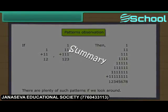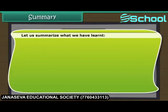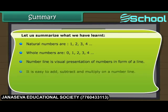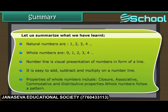Summary: Natural numbers are 1, 2, 3, 4. Whole numbers are 0, 1, 2, 3, 4. A number line is a visual presentation of numbers in the form of a line — it is easy to add, subtract, and multiply on a number line. Properties of whole numbers include closure, associative, commutative, and distributive properties. Whole numbers follow a pattern.